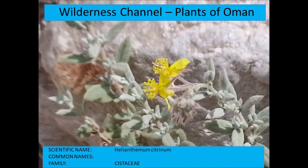From the Cistaceae: Helianthemum citrinum has very striking, pretty yellow flowers that contrast with the gray, light-gray leaves.